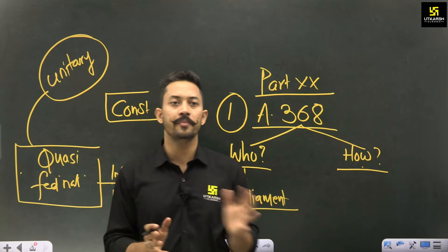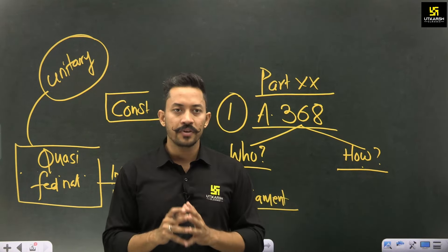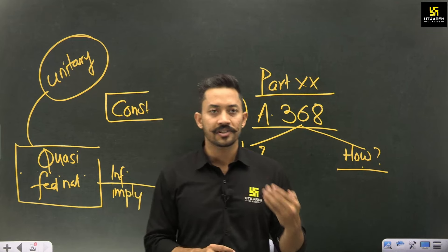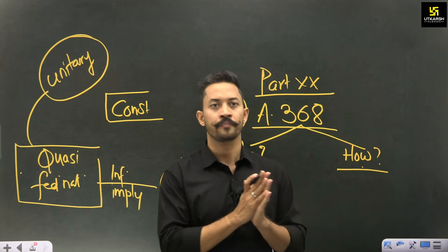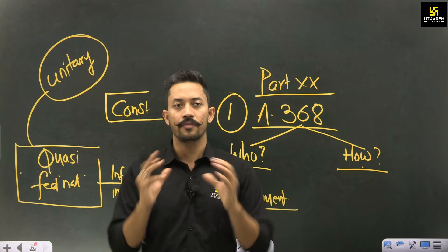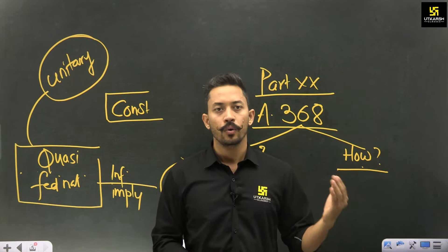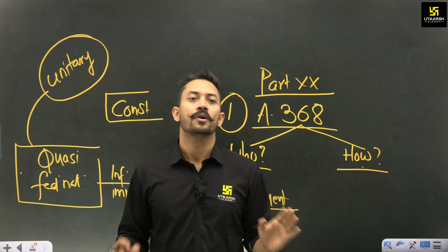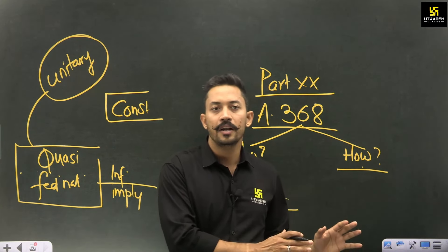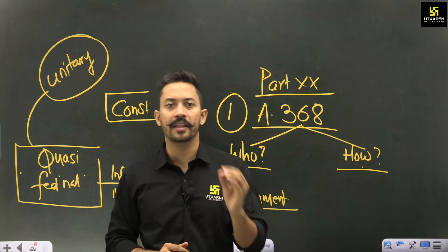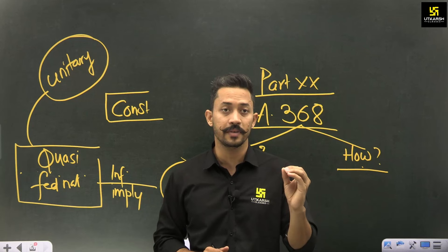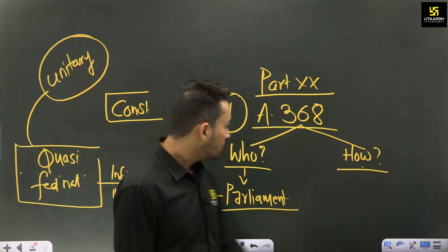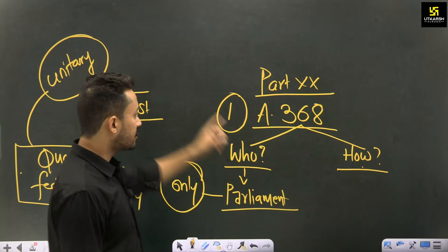This tells us that the Indian constitution is not purely federal but quasi-federal. If we compare with the US, even states have the power to initiate amendment by calling on Congress for a constitutional convention. In India, states have no such power — the constitutional amendment bill originates only in Parliament and is passed only there. There is only one limited situation where state involvement occurs. Parliament's exclusive power signifies the unitary feature of our constitution.